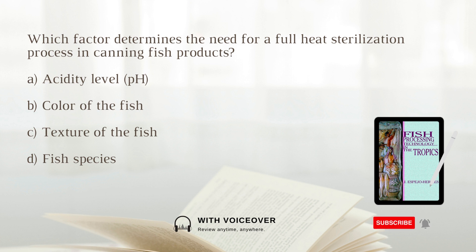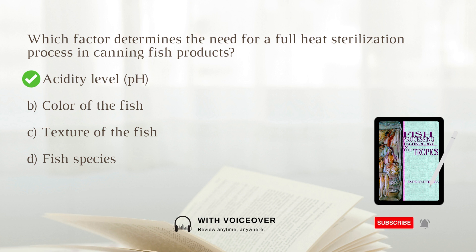Which factor determines the need for a full-heat sterilization process in canning fish products? A. Acidity level. B. Color of the fish. C. Texture of the fish. D. Fish species. Answer: A. Acidity level. The acidity level of fish products categorizes them into different pH groups, determining the extent of heat sterilization needed. Low-acid and medium-acid fish products require full-heat sterilization to ensure safety.